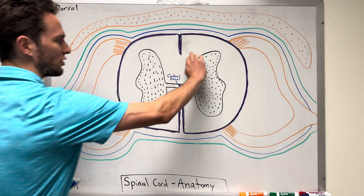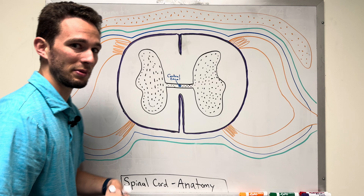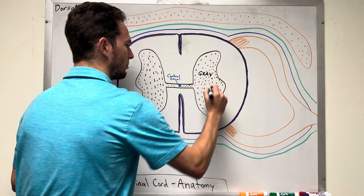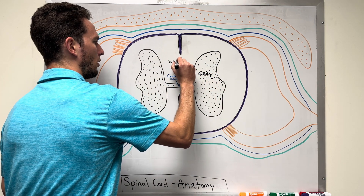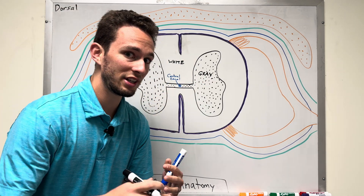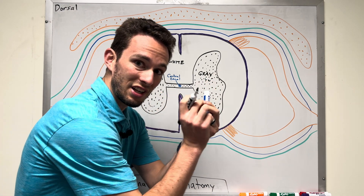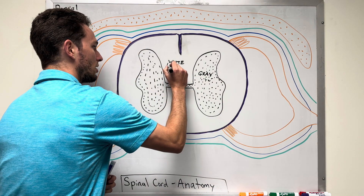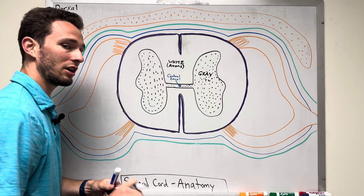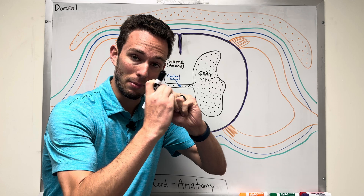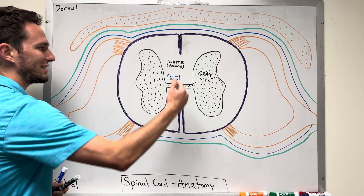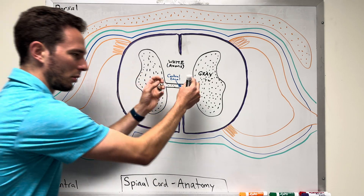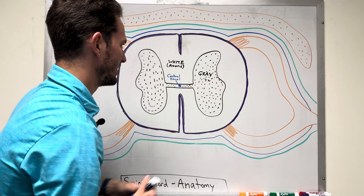We see two main sections: a white section and a dotted section — which will actually appear gray in your textbooks. The gray matter consists of many interneurons and close connectors that communicate and process information. In the white matter, we have myelinated neuron axons — the signaling branch of neurons insulated with myelin — that send long-distance signals up to the brain or down from the brain. The gray matter is where processing happens.